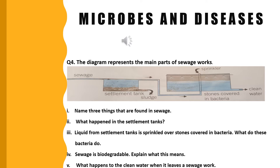The next question is: Liquid from settlement tanks is sprinkled over stones covered in bacteria – what do these bacteria do? The bacteria present in the liquid feed on the remaining waste and decompose it. The effluent produced is clean and safe to be pumped into rivers and oceans.